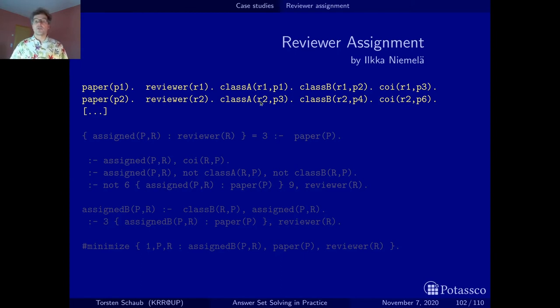This assignment also nicely follows the generate and test methodology. The first thing we do is generate solution candidates. So for each paper we want to select exactly three reviewers among all reviewing possibilities. If you have a thousand reviewers and we look at paper 42, then we will have here a thousand possibilities of people to assess this paper, and we have to select exactly three of them.